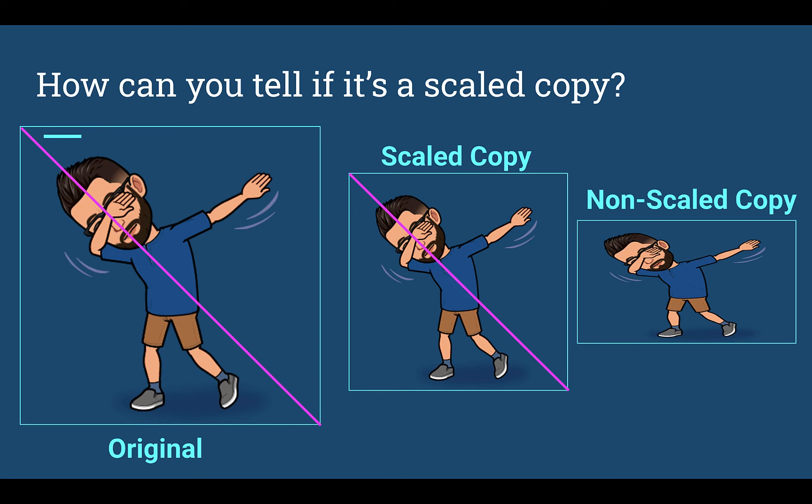If I look at the non-scale copy, it still goes through those same two spots of the picture, but the angle of that line is all of a sudden flatter.